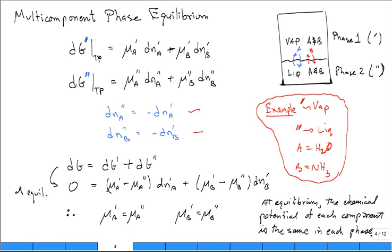At equilibrium, with algebra, you find that the chemical potential for that component in both phases must be equal to the same value, as well as the chemical potential of B. That component in both phases must be equal.